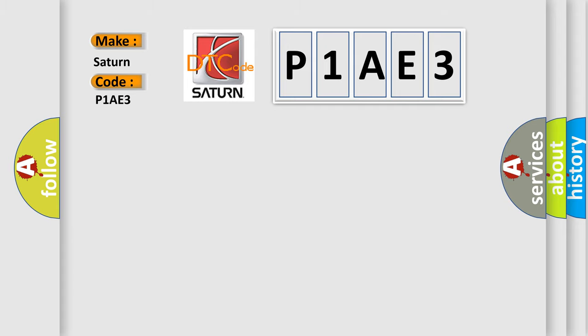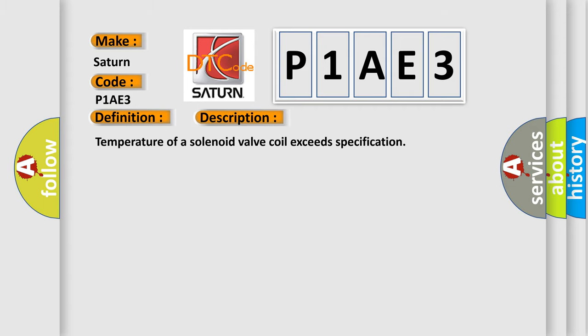The basic definition is LH Stability Control Solenoid Valve Coil System. And now this is a short description of this DTC code: temperature of a solenoid valve coil exceeds specification.